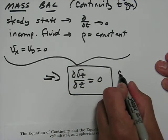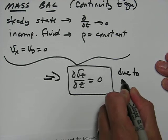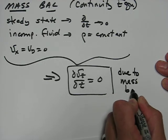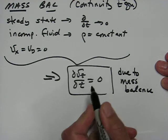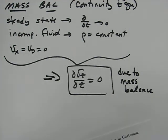So the mass balance gets us to this conclusion, that dvz dz is zero.